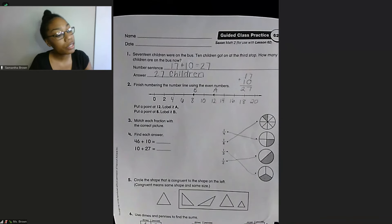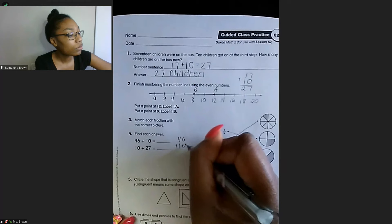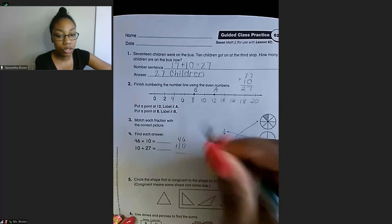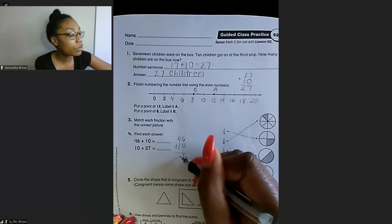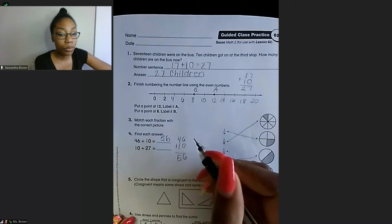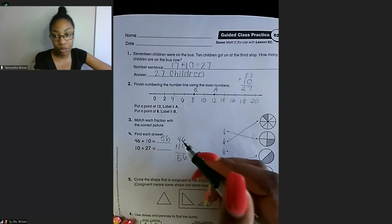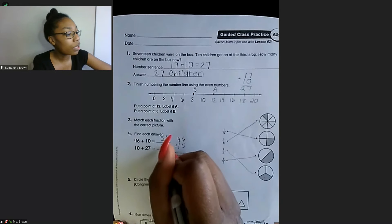we have to find each answer for number 4. So we're adding 10. So once again, if you have a 100s chart, that may be helpful to you. But we have 46 plus 10. So starting on the right side, we have 6 plus 0 equals 6. And 4 plus 1 equals 5. We have 56. And then using what I know, mental math, I would do on either of these. Or using my 100s chart, I know that 10 plus 27 equals 37.